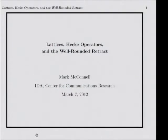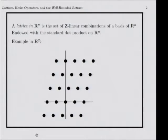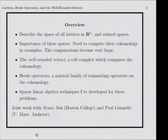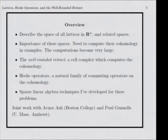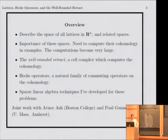Here's a brief overview of what I'd like to talk about. First, I'd like to describe the space of all lattices in R^n — this collection of all lattices, what it looks like as a topological space, and some related spaces. I'll say a few words about why these spaces are important and why we need to compute their cohomology in specific examples, but the computations do become very large.